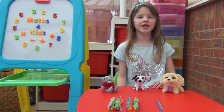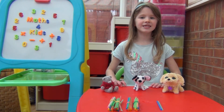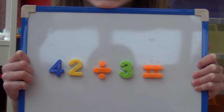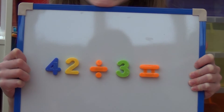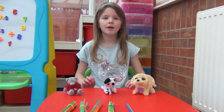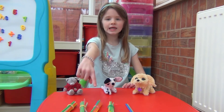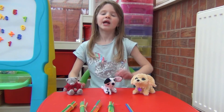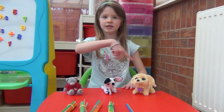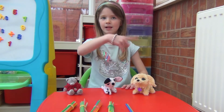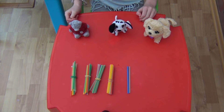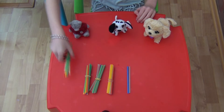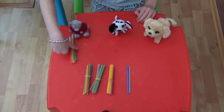Now I'm going to try a trickier one. This time I'm going to use straws to work out 42 divided by 3. I'm going to need 4 tens for the 40 and 2 ones for the 2, and I'm also going to need 3 teddies. I'm going to do exactly the same as last time and share the 4 tens between my 3 teddies.